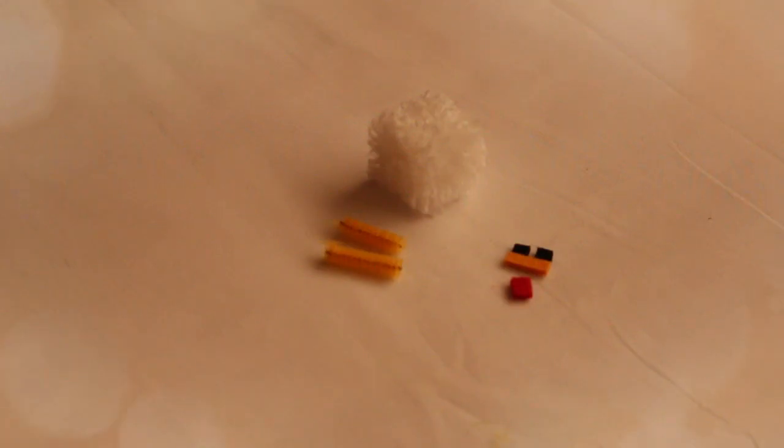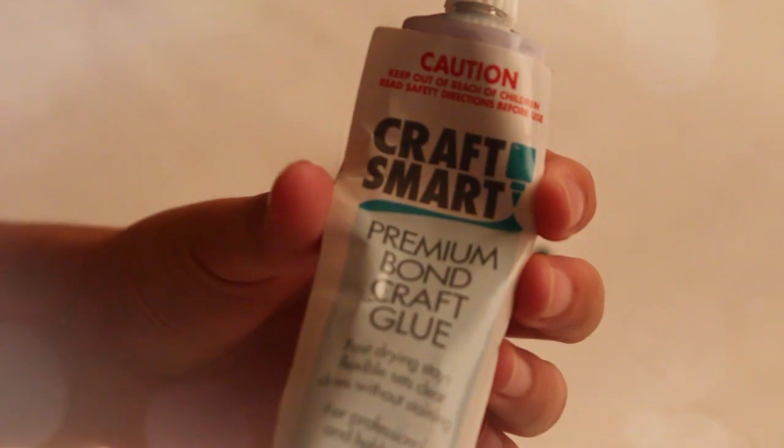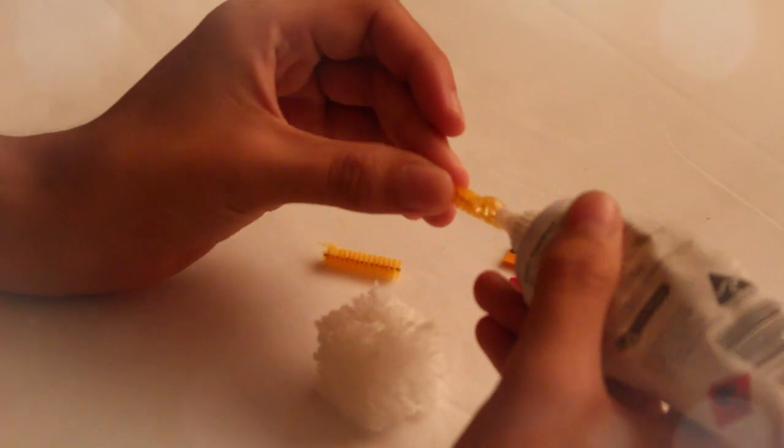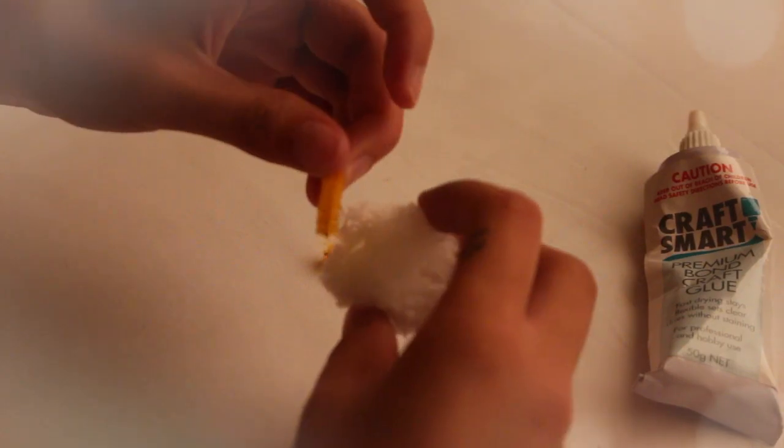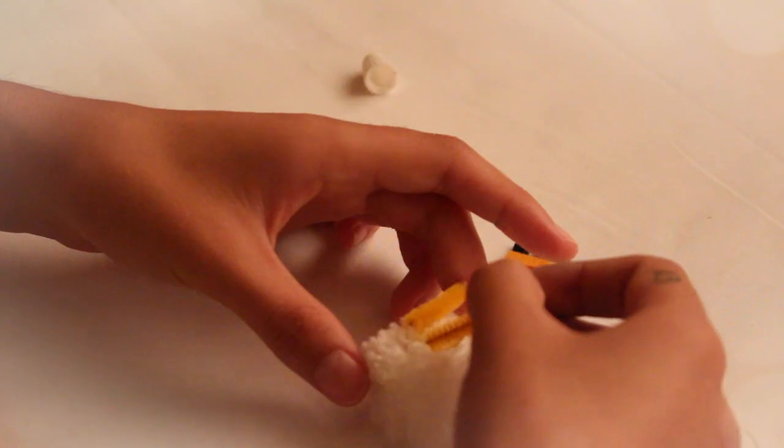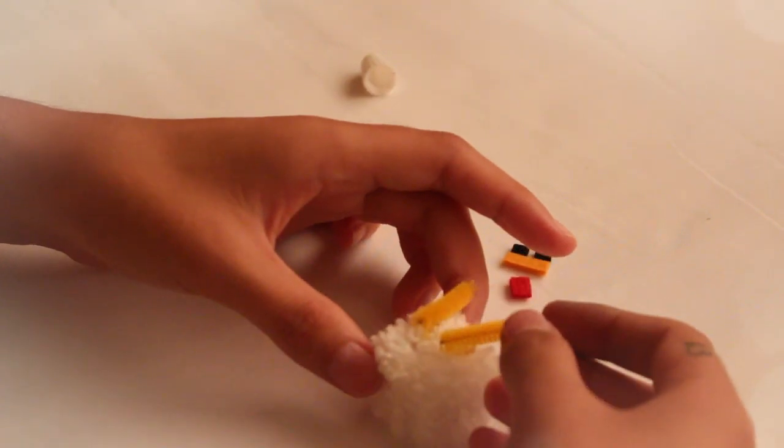Now we have all the pieces. Take your glue and connect the pipe cleaner feet to the pom pom like this.